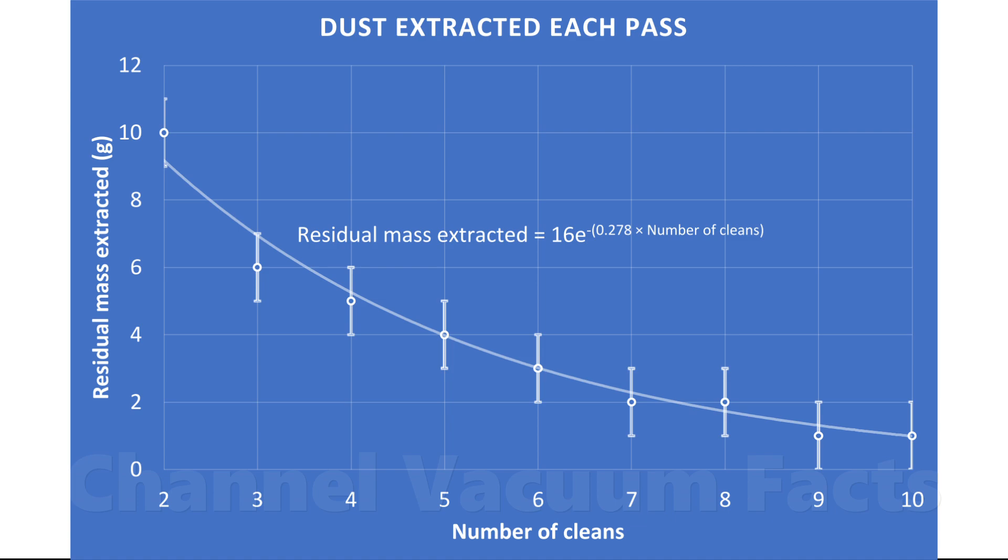Using least squares regression, fitting a curve to this data shows classic first order rate system behavior that is described perfectly by an exponential, just like a half-life. The equation is shown, and this applies to the particular surface area vacuumed of my particular carpet, for my particular vacuum cleaner only. Poorer vacuums would have lower exponential pre-factors and exponents in the equation.